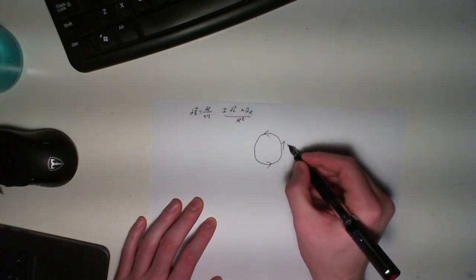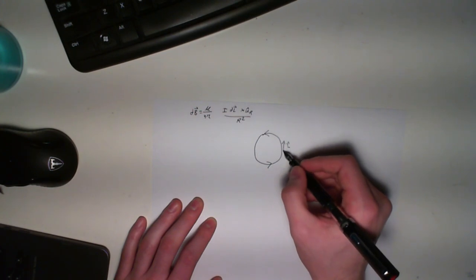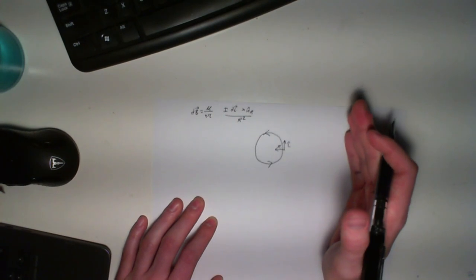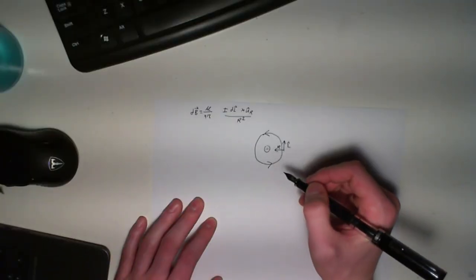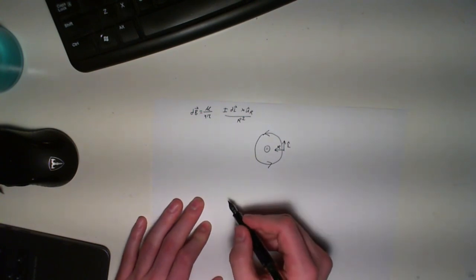This gives us our L vector. We know the R vector is towards the center of the circle. Now if we do L cross R, it gives us the direction of the magnetic field coming out of the page. If we relate this to our setup,